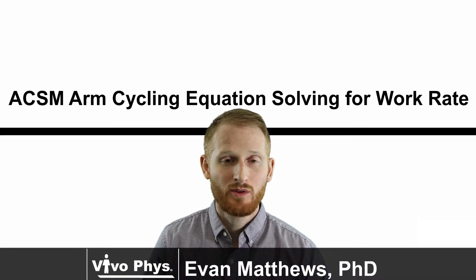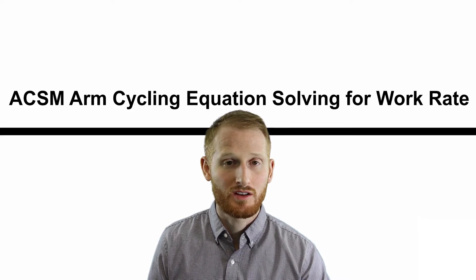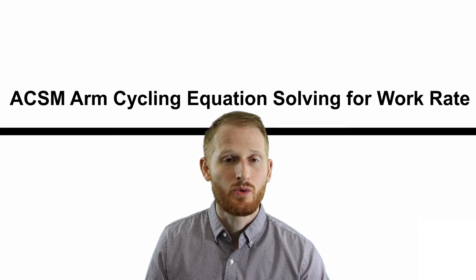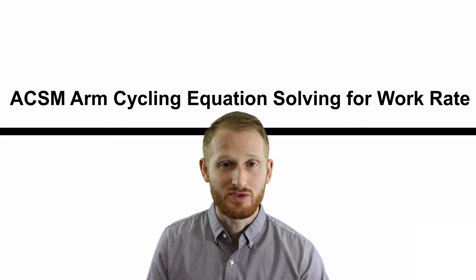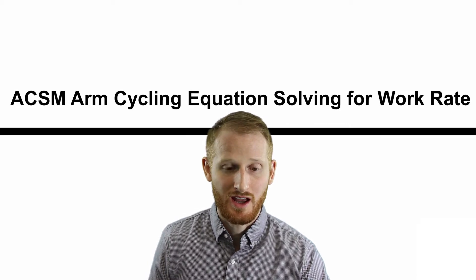Hi, I'm Dr. Matthews. I'm going to be showing you how to use the ACSM calculations for arm cycling ergometry in order to calculate the work rate or intensity when you already know the other variables, which is going to be body mass and the oxygen consumption that you're hoping the person is working at.